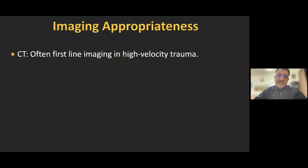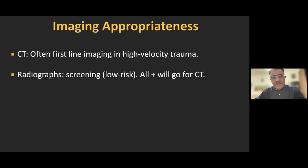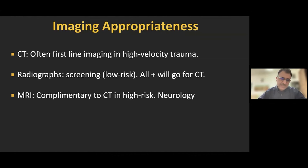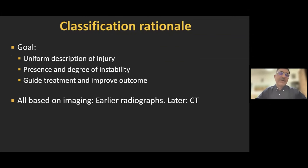Regarding imaging appropriateness, CT is often used as first-line imaging in all high-velocity trauma. Radiographs are used as a screening modality in low-risk patients; however, any abnormality or even suspicious finding on radiographs should prompt CT. Even when radiographs are normal, if clinical suspicion is high for spine trauma, CT should be done. MRI is complementary to CT in high-risk patients and is the imaging modality of choice if x-rays are normal or show osteoporotic compression fracture. Any patient with neurologically positive spine trauma should also undergo MRI.